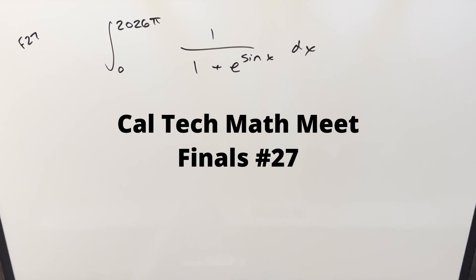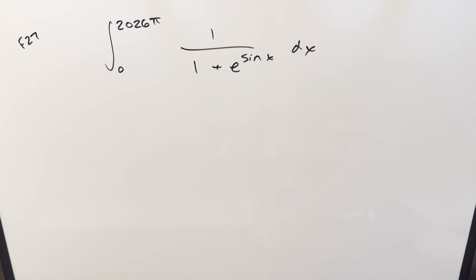Okay, we have an interesting problem from Caltech MathMeet Finals number 27. We have the integral from 0 to 2026π of 1/(1 + e^(sin x)) dx. I'm wondering if this is a mistake - this is the 2025b and they're using 2026 in the bounds. Maybe they should have saved it for next year, but I'm not really sure.